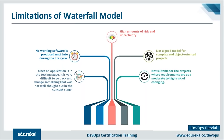For example, suppose a client gives you requirements for a web application today, and after taking a year to build it, the market has changed - the client now wants a mobile application instead. This model is not suitable where requirements are at a moderate to high risk of changing.